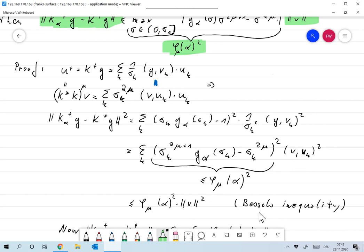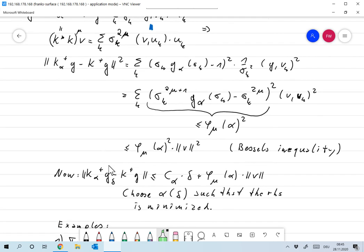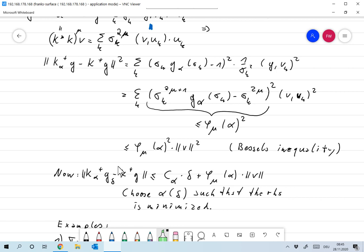And of course, that's again by Bessel's inequality. Okay, now that leads to the note that now both terms in the error estimate or in the error that we're actually interested in are estimated. So the norm of K_α^+ G_δ minus K^+ G, that's the difference between what we can get via the regularization on the wrong data, on the perturbed data, and the quantity that we actually want to have, the difference between these two, can be bounded first by C_α times δ. That was the old estimate. And now this new estimate, φ_μ of α times the norm of V.